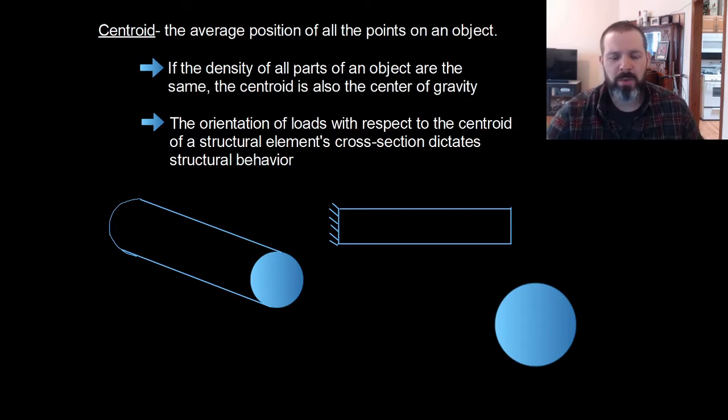We care about the centroid because the orientation of loads with respect to the centroid of a structural element's cross-section dictates structural behavior. A circular shape is infinitely symmetric, so the centroid exists directly in the middle of the circle. This is an isometric view of a round solid bar. The centroid of that bar is in the middle. If I look along the length, I can draw axes down the middle that represents where the centroid is located.